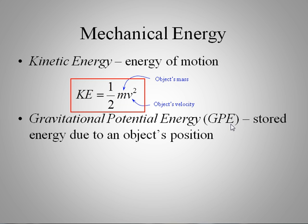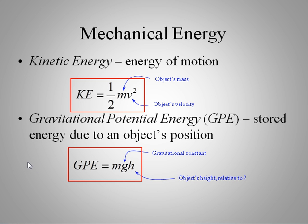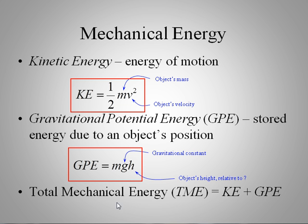Gravitational potential energy - potential refers to stored energy, and gravitational means it's due to its position. We define this by the object's mass times the gravitational constant (the acceleration of gravity) times the object's height above some level. The total mechanical energy, abbreviated TME, is the sum of kinetic and gravitational potential energies.